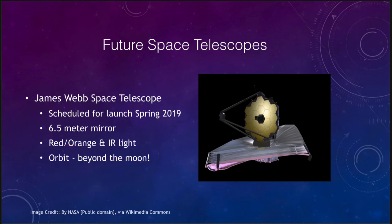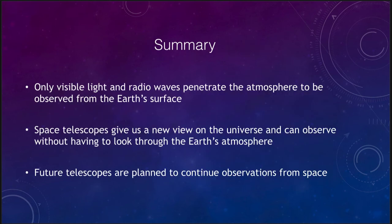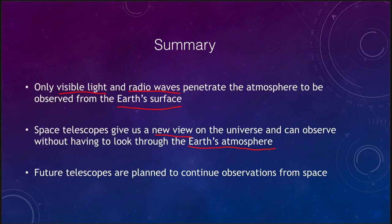To summarize: on Earth, we can only use visible light and radio waves — the only ones that completely penetrate the Earth's atmosphere. Space telescopes give us a new view of the universe and do not have to look through the Earth's atmosphere, avoiding both the blocking of certain wavelengths and the blurring effect of atmospheric turbulence. There are a number of space telescopes in operation, and future ones are planned. Even though it is more expensive to put a telescope in space, it gives us completely different views of the universe, making it very much worth the additional expense.